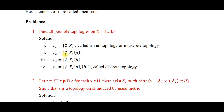τ₂ = {∅, {A}, X}. τ₃ = {∅, {B}, X}. And τ₄ = {∅, {A}, {B}, X}, that is the set of all subsets (power set) of X, which is called the discrete topology on X.